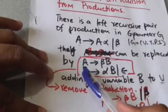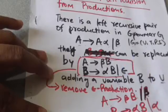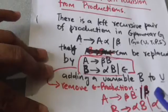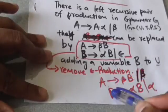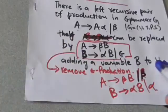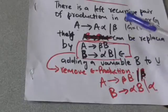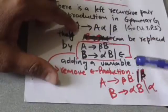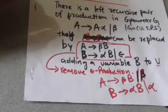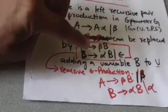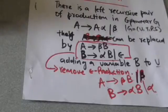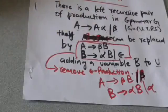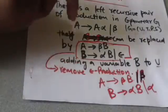Now, notice there is an empty production: B derives the empty string. If we want to remove empty productions, we can replace these productions with: A derives beta B, A derives beta, B derives alpha B, and B derives alpha. When we replace the original productions with either of these sets of productions in grammar G, the language of grammar G will not be affected — the language remains the same, but the left recursion will be removed.